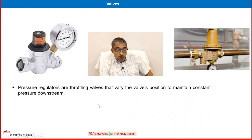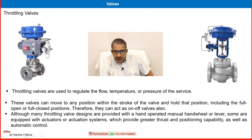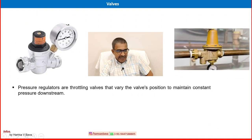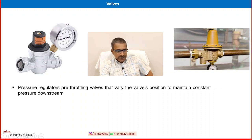Pressure regulators are also throttling valves in another category. Pressure regulators are throttling valves that vary the valve's position to maintain constant pressure downstream. You can see the pressure regulator in the images shown. The upstream supply pressure enters and the regulator restricts and delivers the necessary reduced pressure to the service — that is what a pressure regulator does.